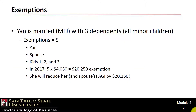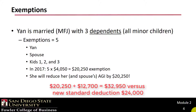Let's look at an example, primarily to see how the replacement of the exemption with a greater standard deduction plays out. Yann is married and has 3 kids, thus 5 exemptions. Each exemption was worth $4,050 in 2017, so the total exemption deduction would be $20,250. In addition, if Yann took the standard deduction of $12,700, the total deduction would be $32,950.